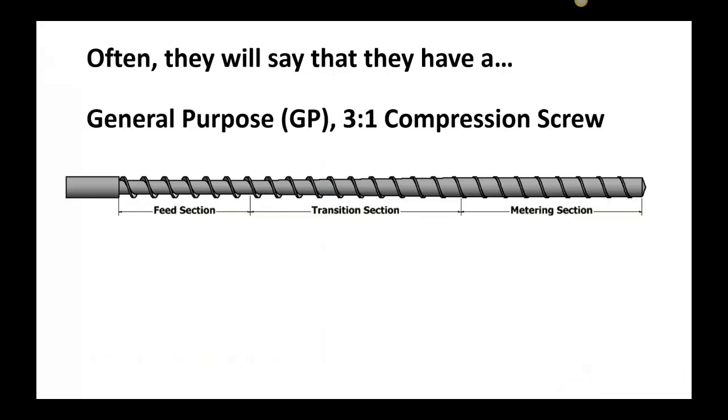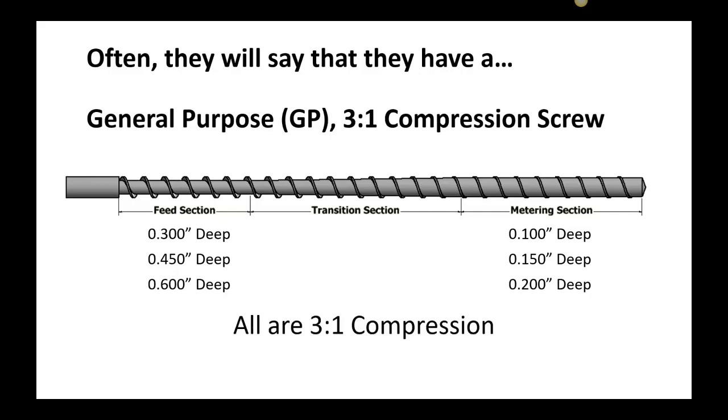Often they'll say that we have a general purpose 3 to 1 compression screw, but does this mean we have a 300 thou deep feed section and 100 thou deep metering section, or 450 and 150, or 600 and 200? All of these have a 3 to 1 compression ratio and we consider all of these to be GP, or generally poor.